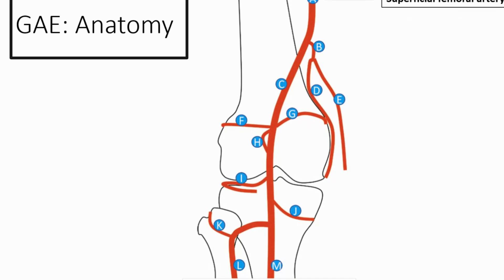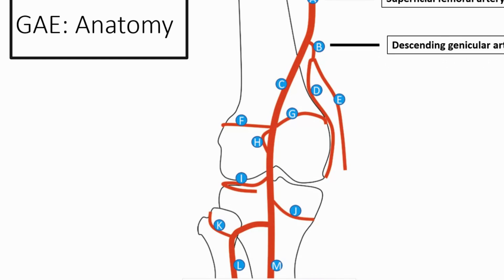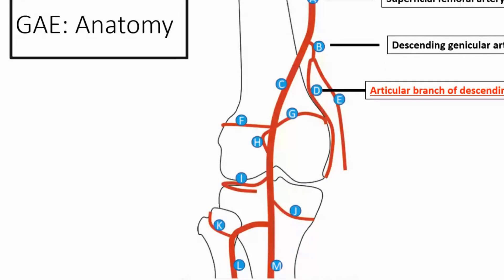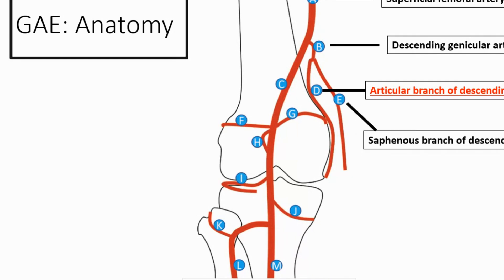Starting at the top, you have your superficial femoral artery. As you come down close to Hunter's Canal, you have the origin of the descending genicular artery. The artery of interest specifically off the descending genicular is the articular branch, which feeds the medial compartment — the distal femoral condyle of the medial compartment. This is not to be confused with the saphenous branch, which is more often than not the lateral branch off the descending genicular, and does not feed the joint at all — it's mainly cutaneous, nerve branches, and muscles.